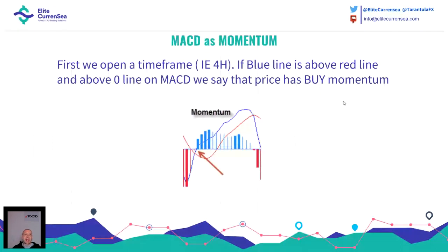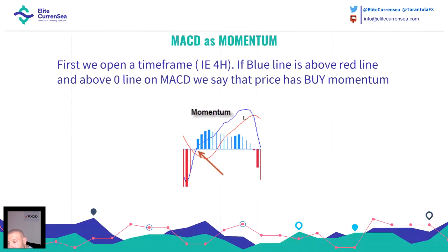This is just an example on a four-hour timeframe, but it's important that you understand the logic. When the price - now watch this, this is very important regarding MACD. If the blue line is above the red line and the blue line is above the zero line, we have buy momentum. This blue line on the ECS MACD indicator is momentum. But if you see on a higher timeframe that both lines are above zero line, then we have a trend. If the blue line is below the red line and below the zero line, we have sell momentum.